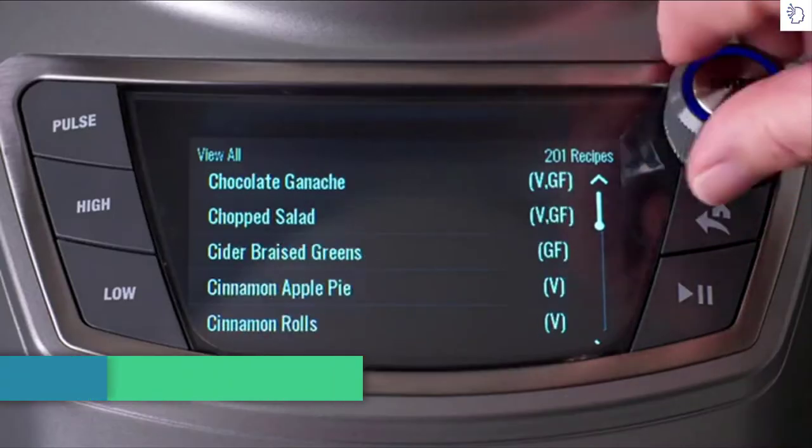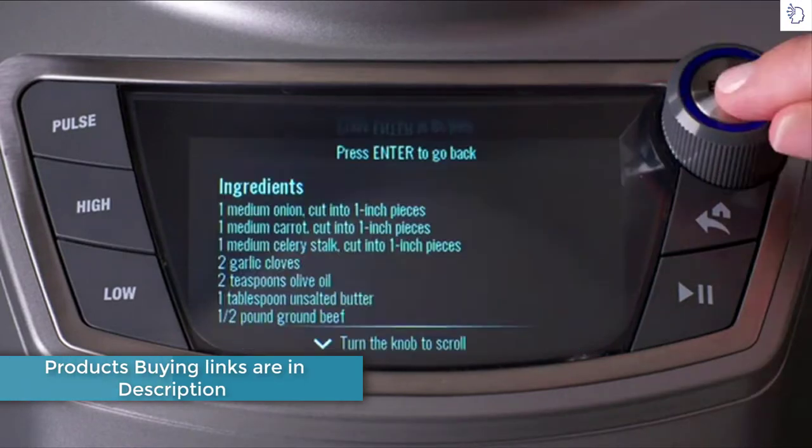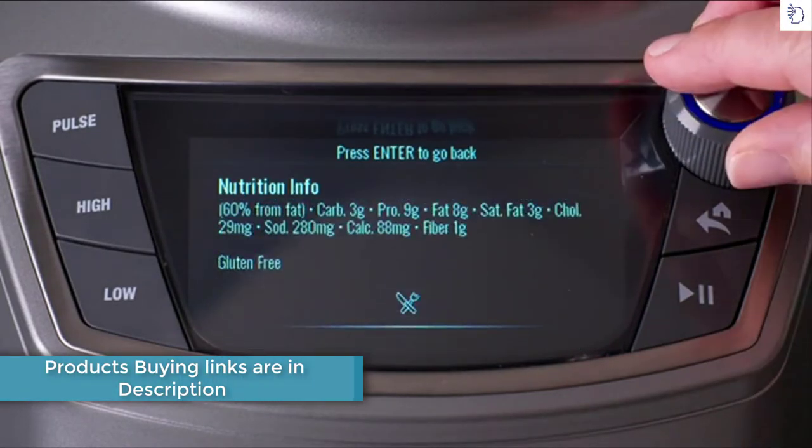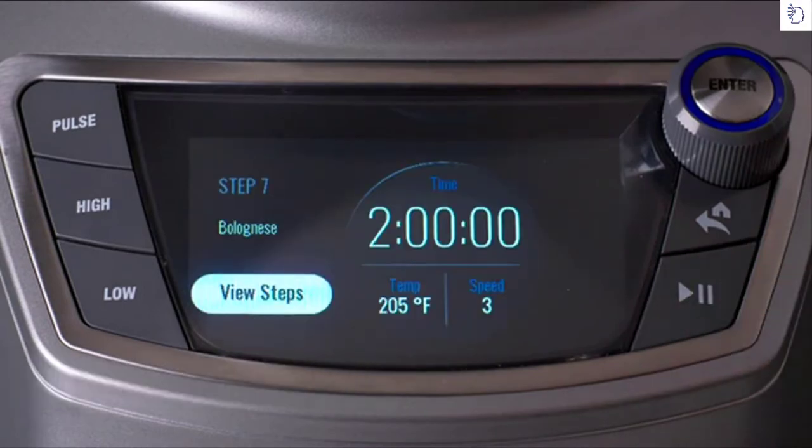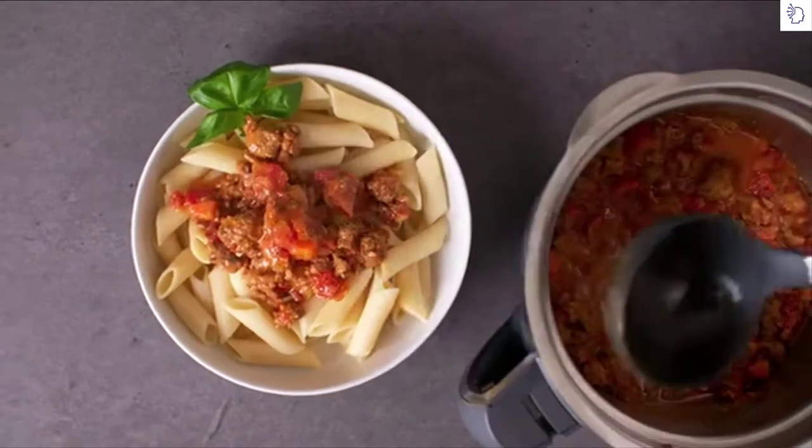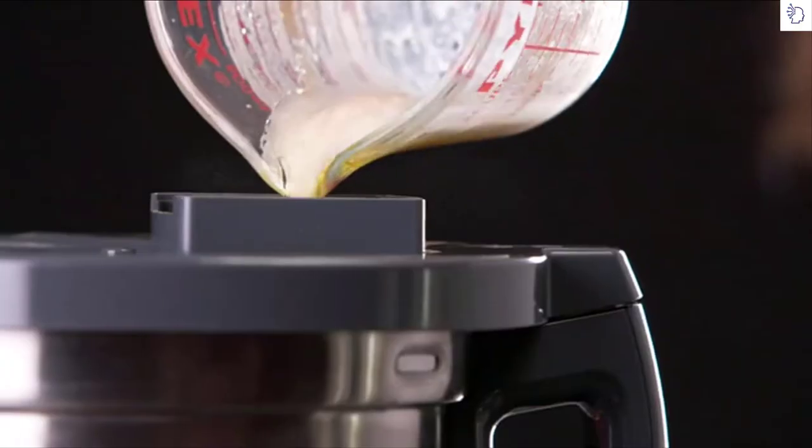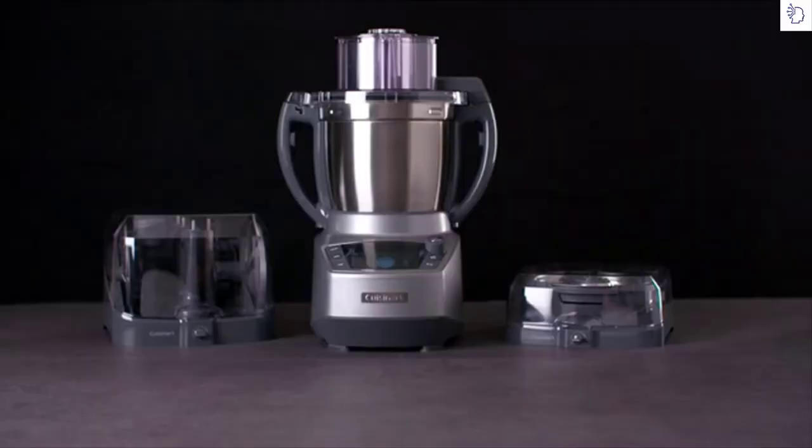200 pre-programmed recipes expertly guide you through every step with full-color photos, an ingredient list, and nutritional information. You can also customize your cooking with multiple functions, a timer, speeds, and precision temperature control, producing exceptional results.